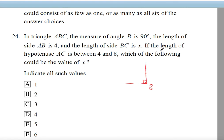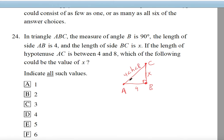I'm going to draw the triangle with the height longer. AB is 4, BC is X. If the length of the hypotenuse AC is between 4 and 8 — that is, 4 is less than the hypotenuse which is less than 8 — which of the following could be the value of X?